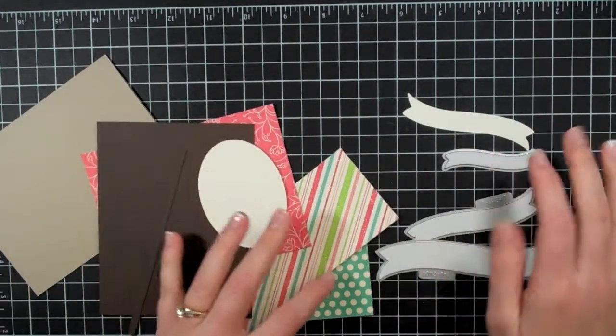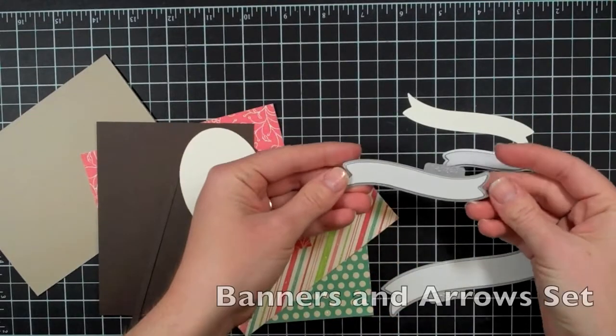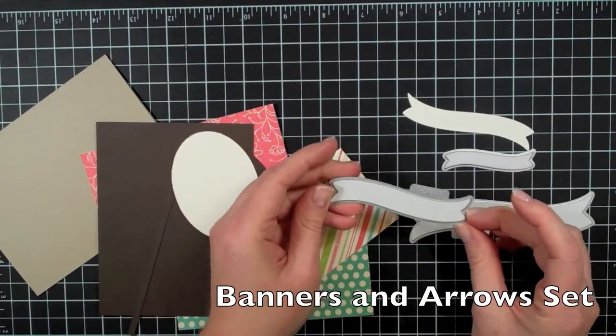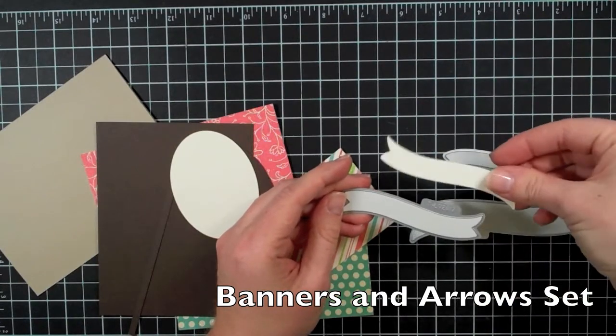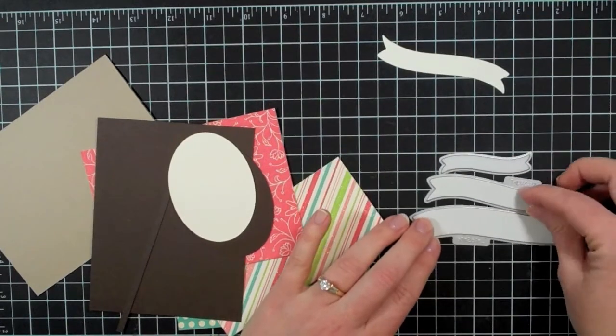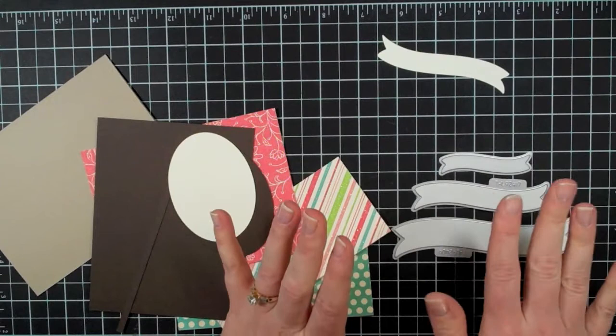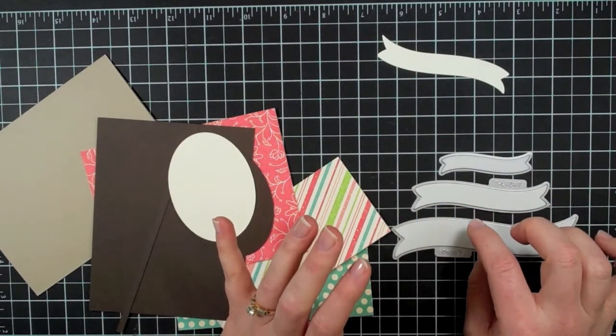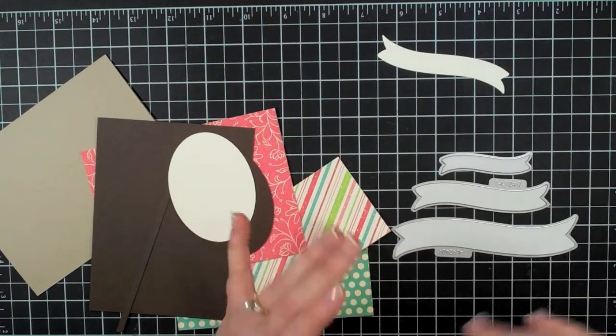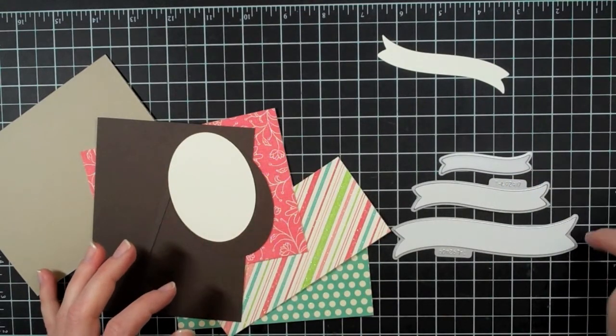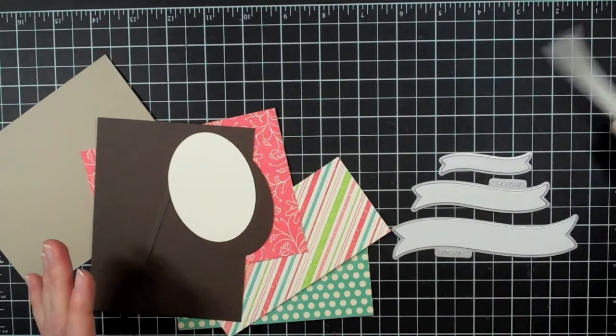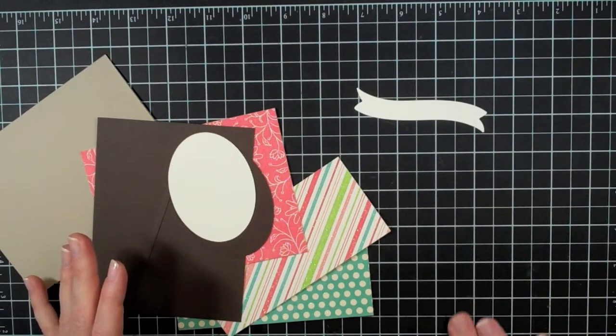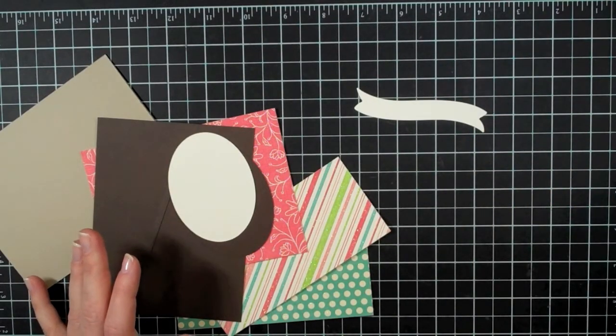I'm going to be using this middle banner from the Lifestyle Crafts Die Set. It's already cut here but I just wanted to show these to you because these are some of my favorite dies right now. I am loving them. They are perfect for a little sentiment across your card. The set comes with three different sizes. I'm using the middle one.